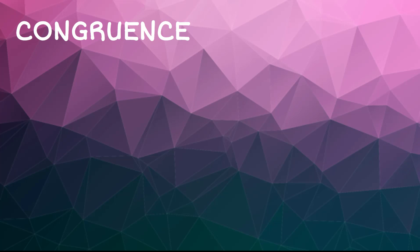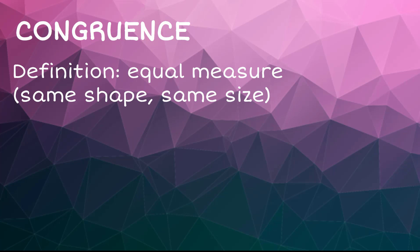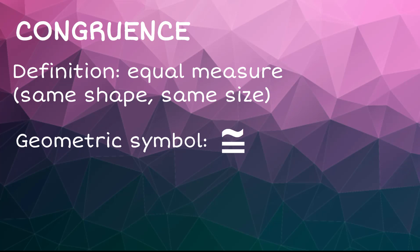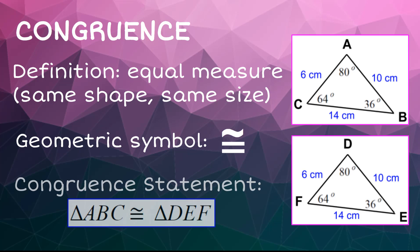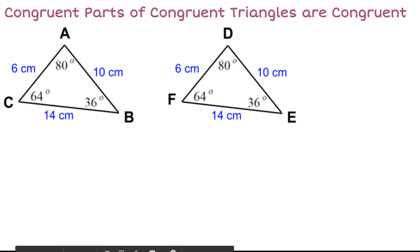Congruence is a very important concept in geometry. The definition means equal measure, so if two things are congruent, they have equal measure. If two shapes are congruent, they're the same shape and the same size. The symbol for congruence is an equal sign with a squiggle on top. Look at these two triangles — they have all the same angles and all the same sides, therefore they are congruent. In the congruent statement we would write: triangle ABC is congruent to triangle DEF.